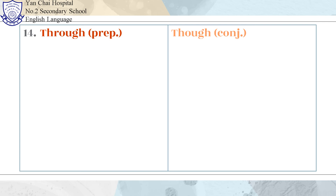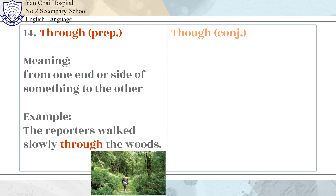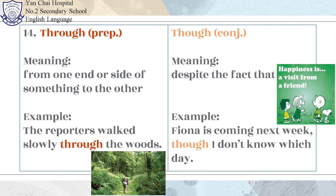Number 14: Through and Though. Through means from one end or side of something to the other. Example: The reporters walked slowly through the woods. Though means despite the fact that. Example: Fiona is coming next week, though I don't know which day.